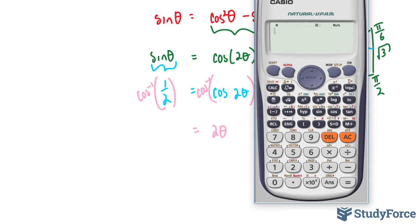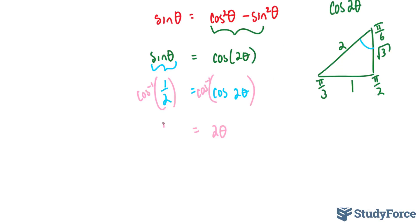So we have inverse cosine 1 over 2 gives us pi over 3. Now we still have to find out this theta. So we divide both sides by 2, and that gives us pi over 6 is equal to theta.